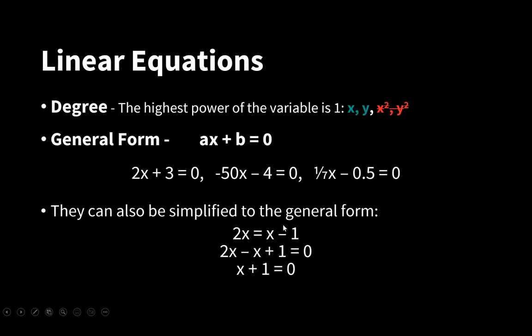We can shift x minus 1 to the left side to get 2x minus x plus 1 equals 0, and then if we simplify, we get x plus 1 equals 0. In this case, x is the variable, the coefficient is 1, but we do not see it, and the constant value is 1.